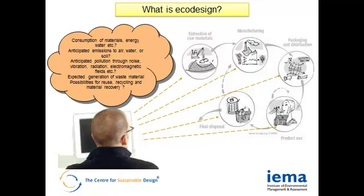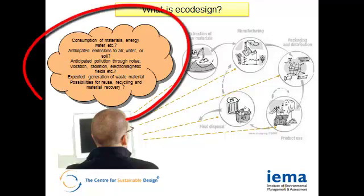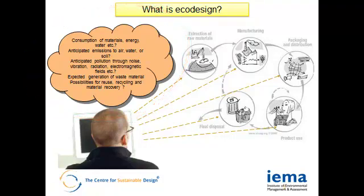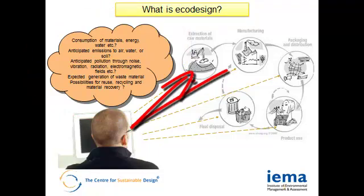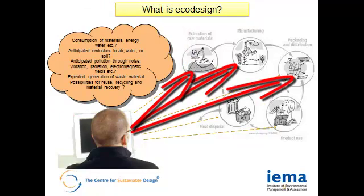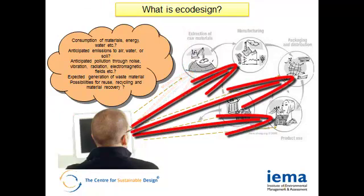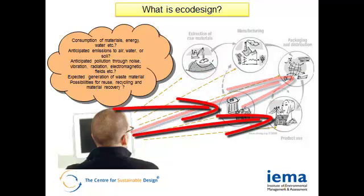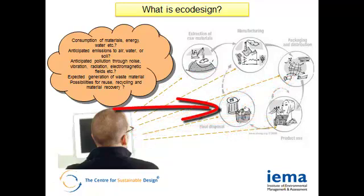Before we go further, it will be useful to explain what eco-design is and why it is becoming increasingly important to carry it out. Eco-design, or as it is sometimes called design for the environment, is the systematic identification of environmental aspects in each of a product's lifecycle phases that lead to adverse environmental impacts, and the adoption of appropriate design measures to reduce and improve these impacts.